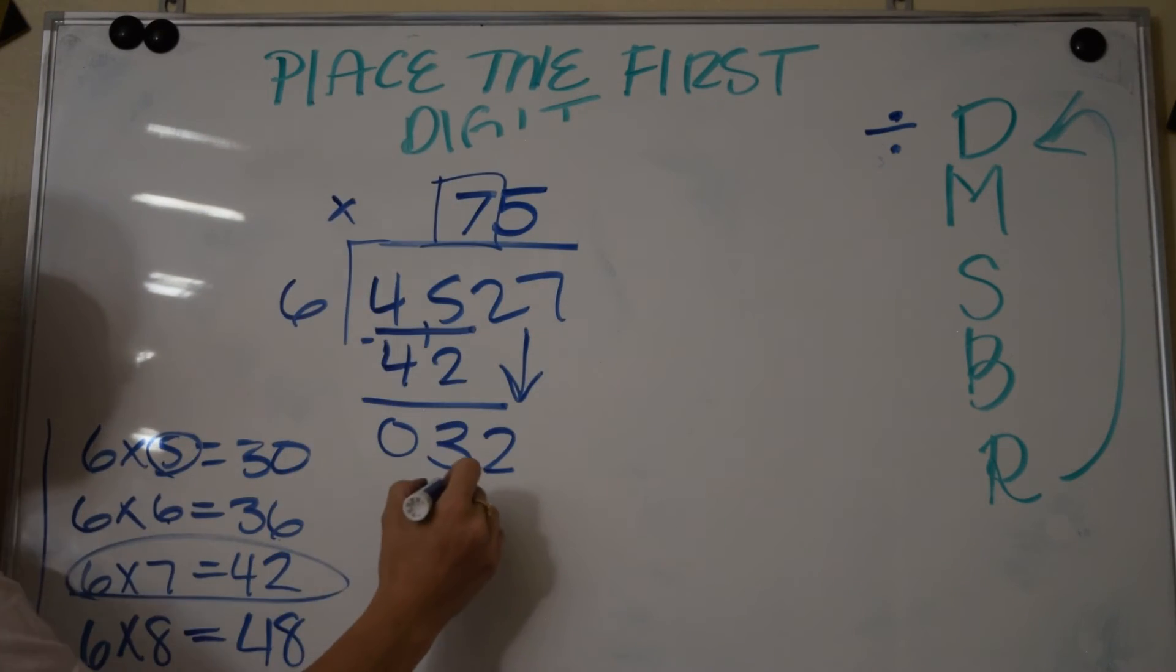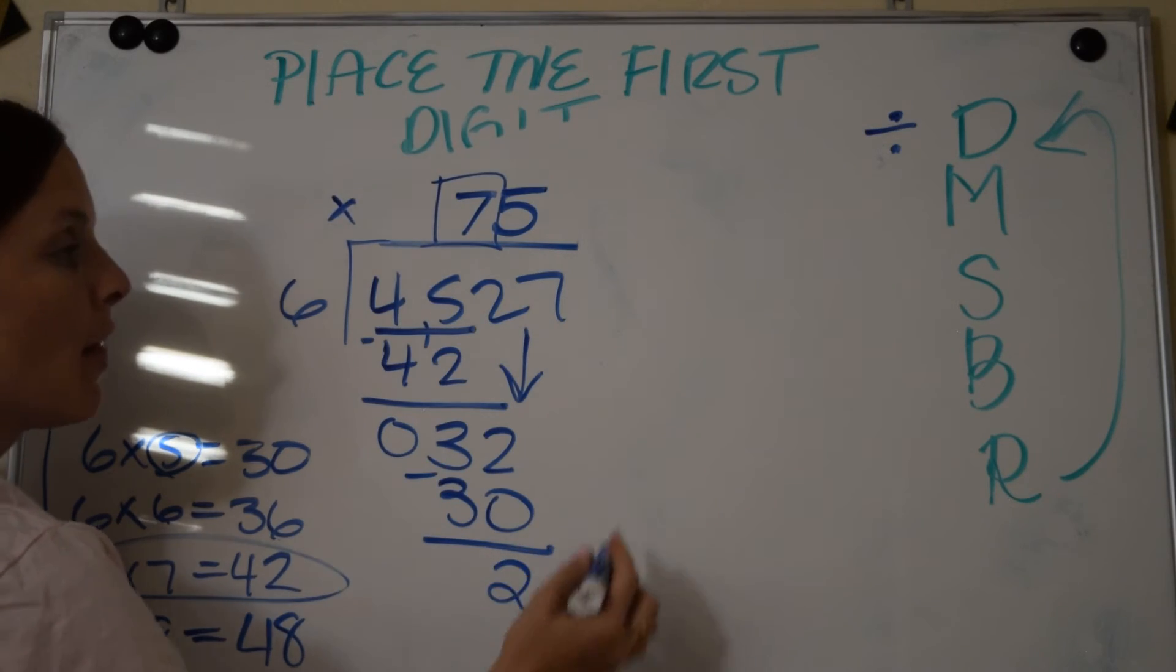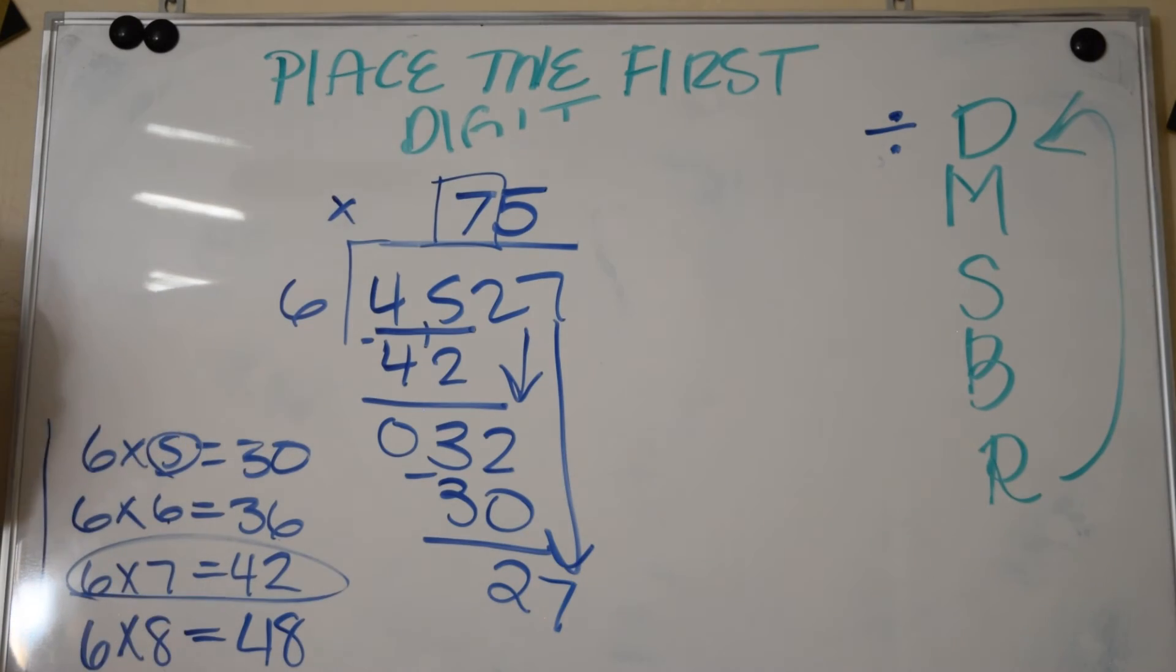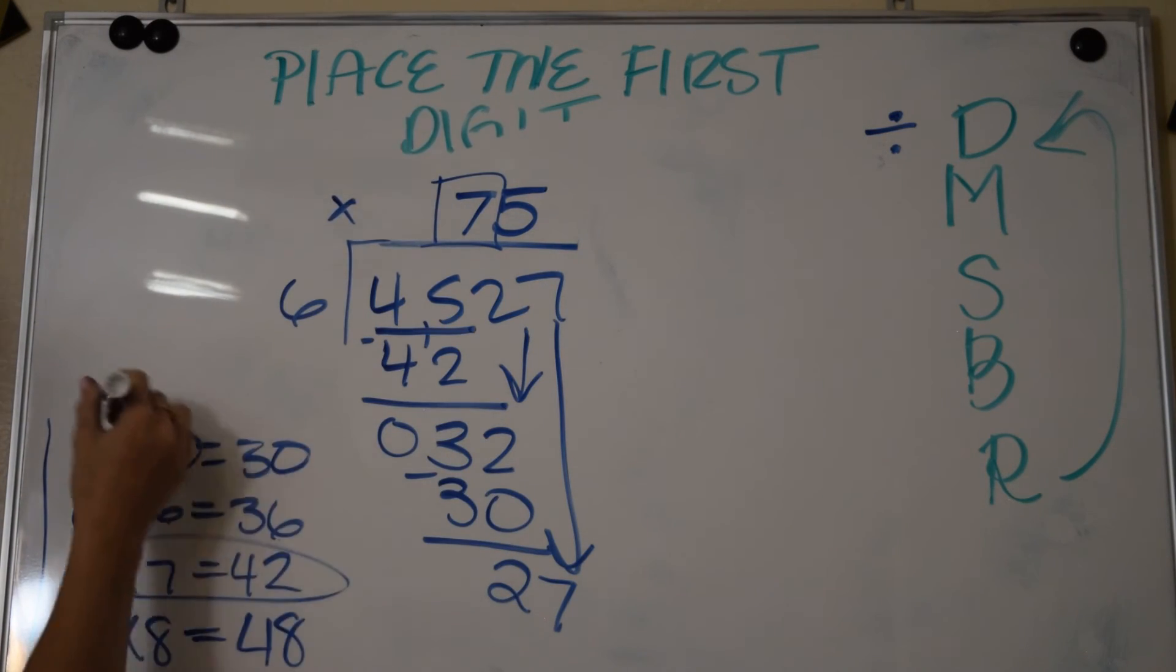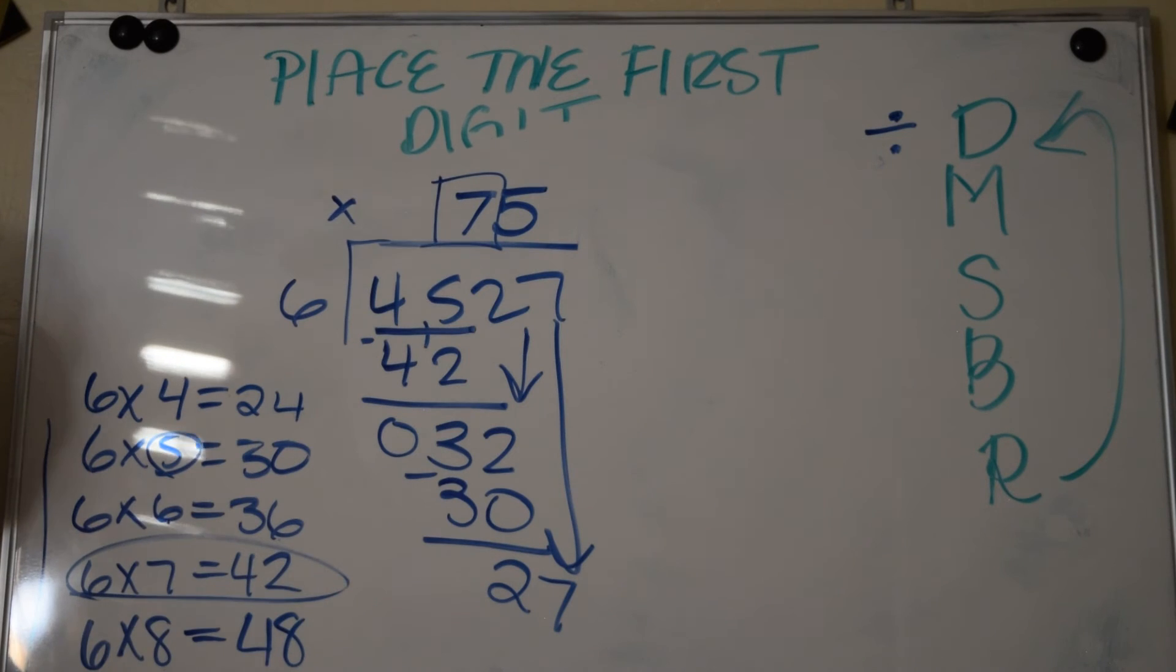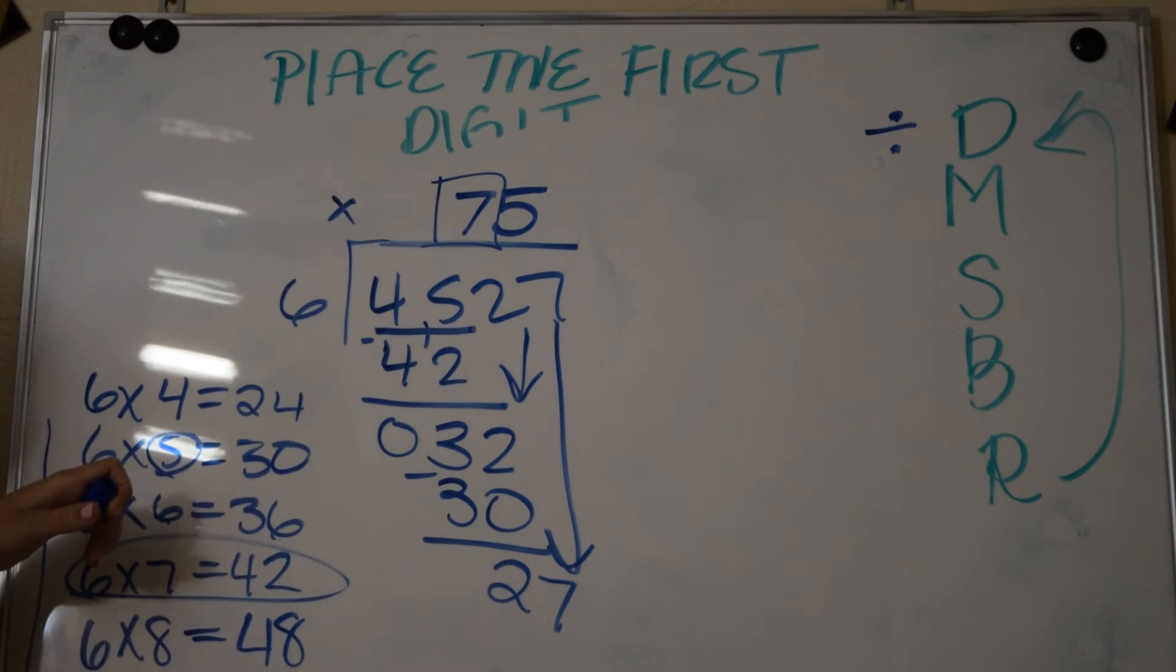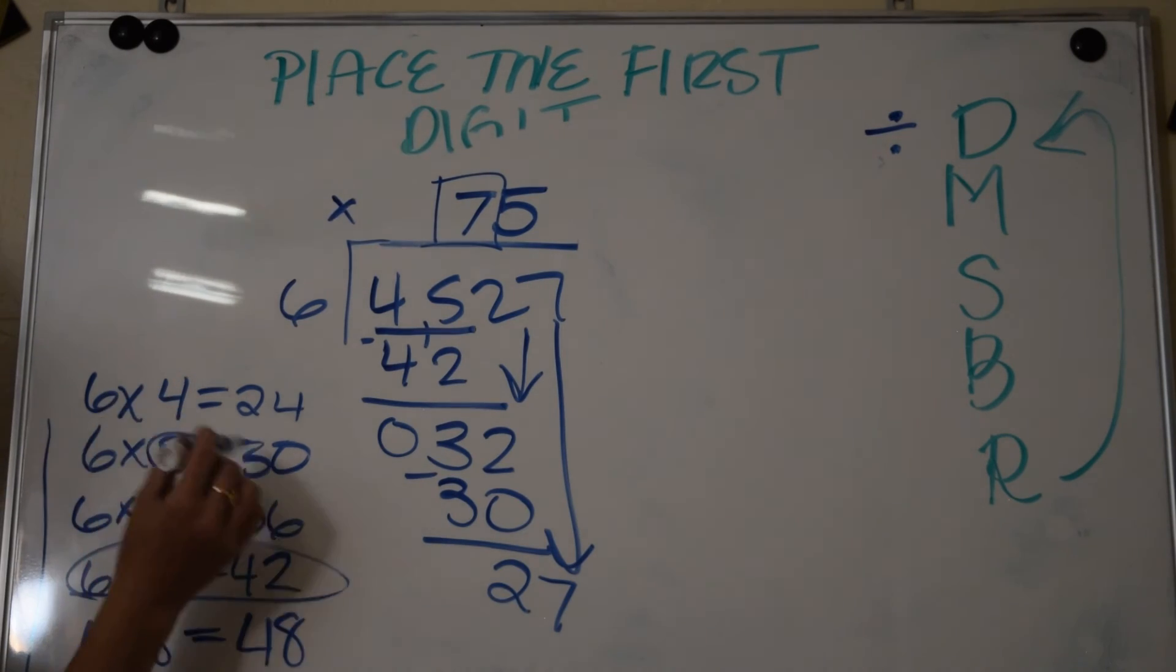Put your 5 in the very next spot. 5 times 6 is 30. Then you subtract and you get 2. Then you have another number to bring down, it happens to be a 7. 6 into 27. Well, 6 times 5 is 30, so that's too high. I need to go back down. 6 times 4 is 24. Well, 24 is below 27, but when I go to 6 times 5 it goes above 27, it's 30. So I know the most that can go in is 4 times.